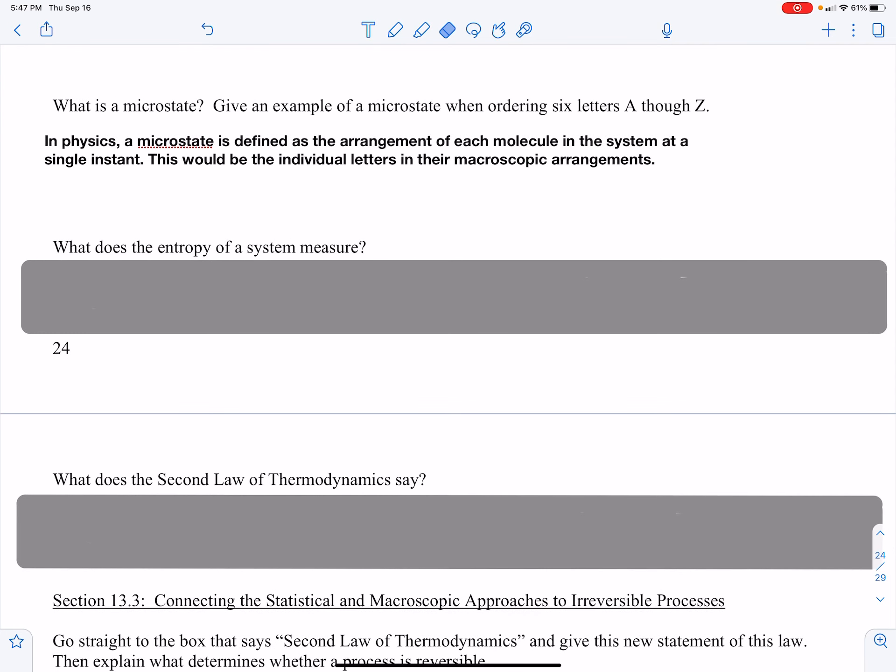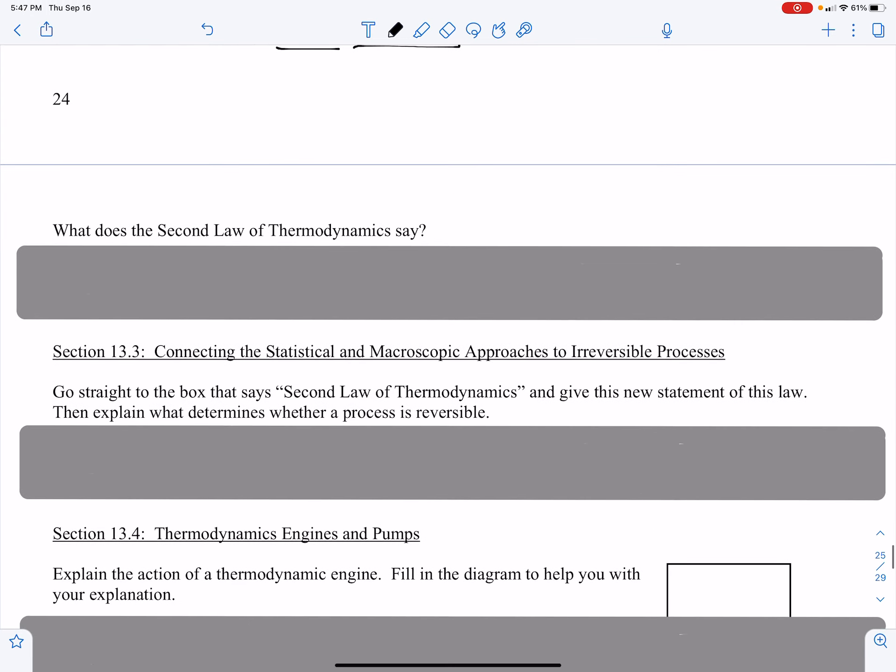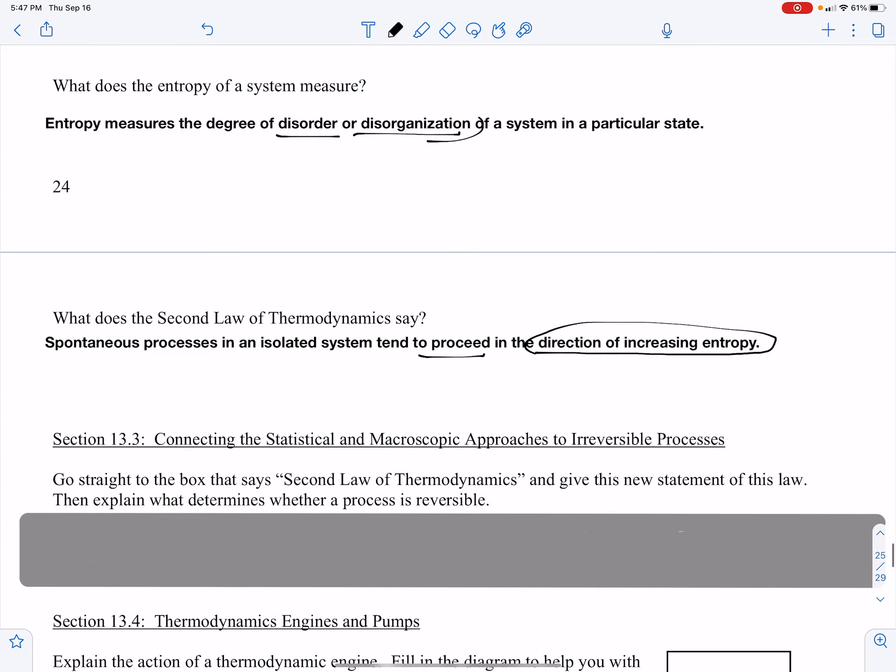What does entropy of a system measure? Entropy measures the degree of disorder or disorganization of a system. And the second law basically states that natural processes, which are spontaneous, always proceed in a direction of increasing entropy, which is increasing disorder and disorganization.